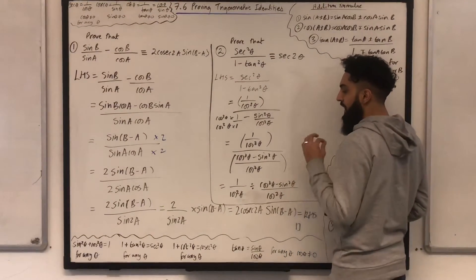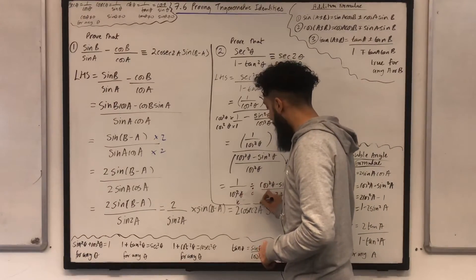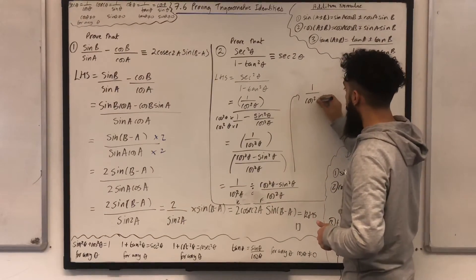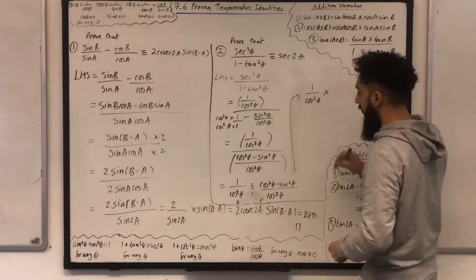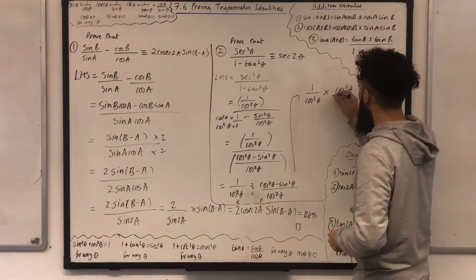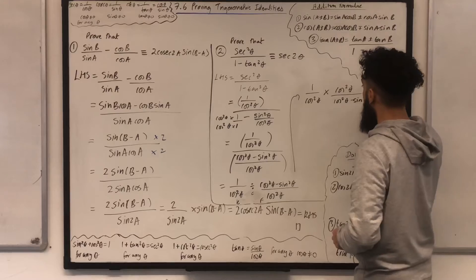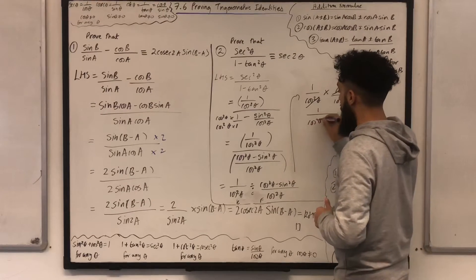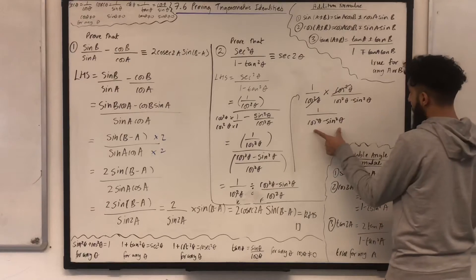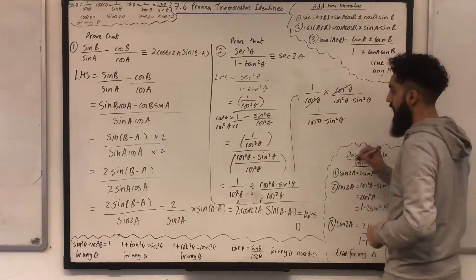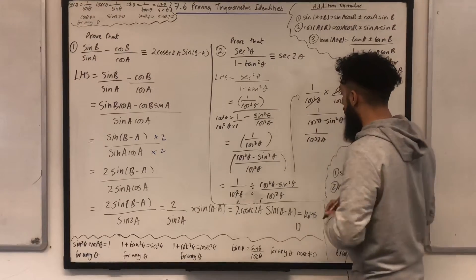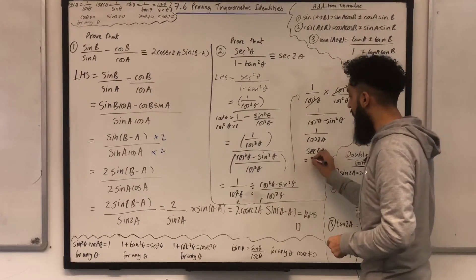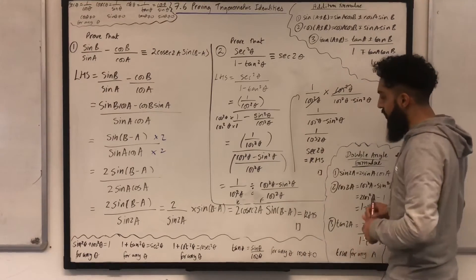Now I can divide these fractions using the KCF method: Keep, Change, Flip. So the first fraction I keep as 1 over cos squared theta, I change the division into multiplication, and I flip the second fraction to give me cos squared theta all over cos squared theta minus sin squared theta. The cos squared thetas cancel out to give me 1 over cos squared theta minus sin squared theta. But I know that cos squared theta minus sin squared theta is just cos 2 theta. So I can write 1 over cos 2 theta. But 1 over cos 2 theta is just sec 2 theta, which is precisely the right-hand side. I can end the question by drawing a little box, which means end of proof.